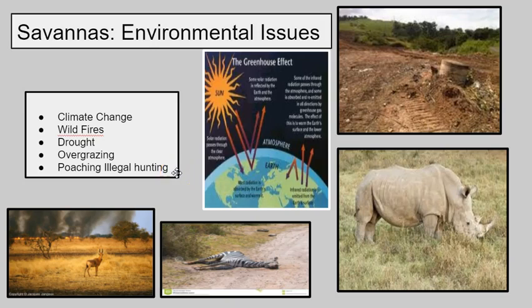There are a few environmental issues that are going to pop up in our Savannah biomes. The first one is climate change, which we've touched on for a few other biomes. Climate change is going to affect seasonal, annual, minimum, and maximum temperatures here, as well as changes in precipitation patterns.